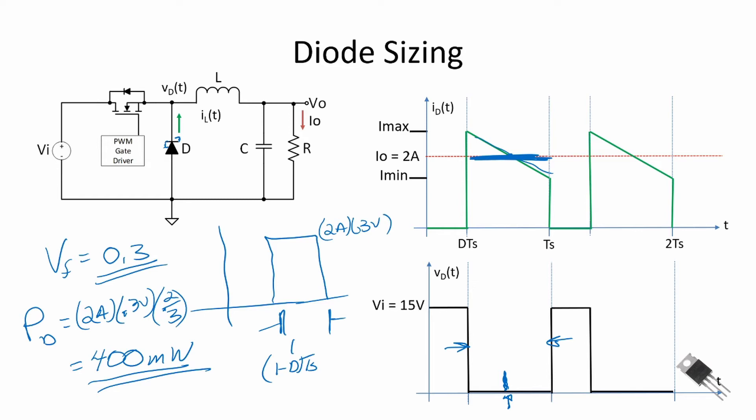We have the loss in the inductor that was 200 milliwatts, the loss in the diode 400 milliwatts, which brings us up to 600 milliwatts, which only leaves us with about 500 milliwatts left for the MOSFET.